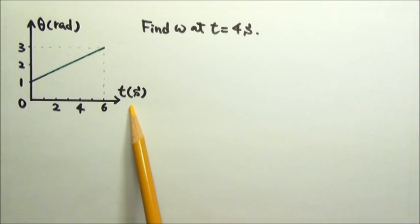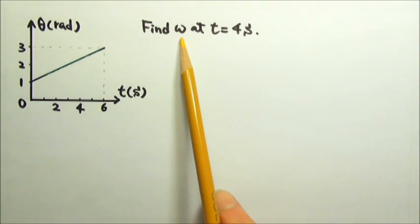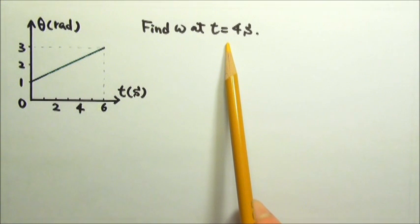The angular position as a function of time graph of a rotating wheel is given in this figure. Find the angular velocity of the wheel at t equals 4 seconds.